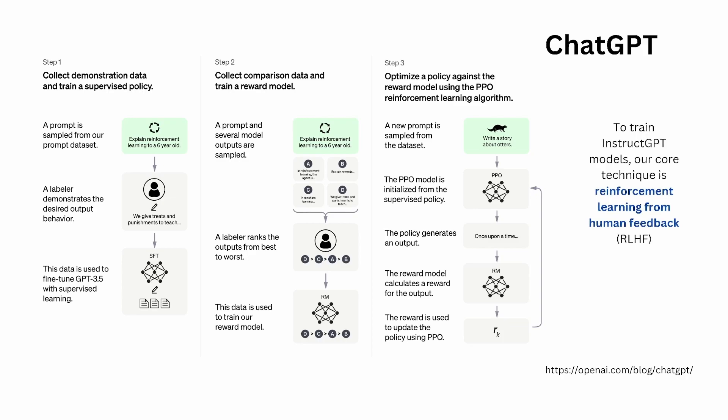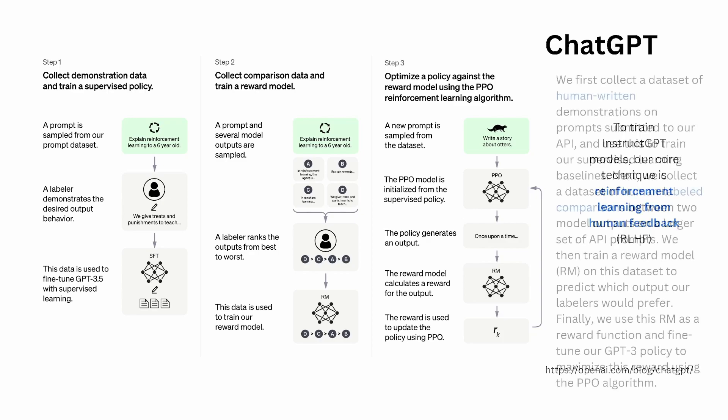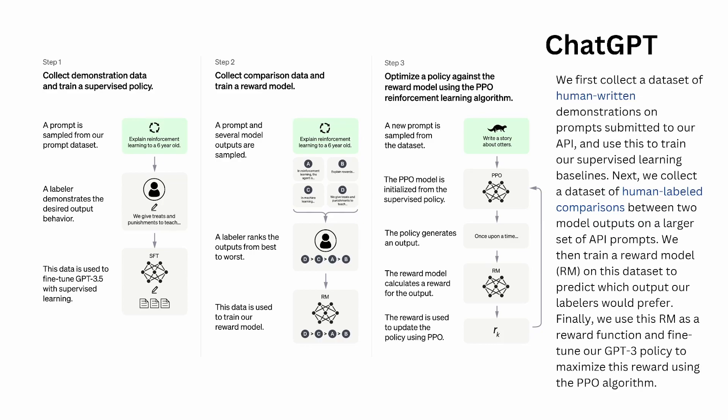To train InstructGPT models, the technique they use is reinforcement learning from human feedback — human feedback. This is the critical point. As you can see, in step one we have a human labeler, and in step two we also have a labeler. There is a lot of human interaction involved, and this is why it gives you these excellent results.